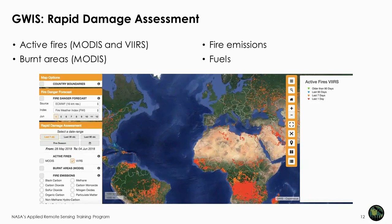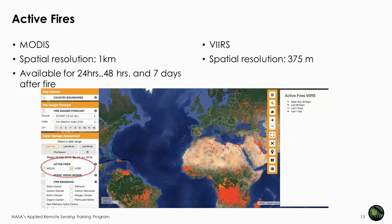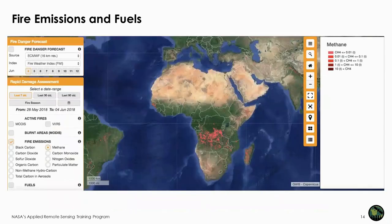The rapid damage assessment includes active fires from MODIS and VIIRS, burned areas from MODIS, fire emissions, and fuels. The active fire data are available from MODIS at 1 kilometer spatial resolution or VIIRS at 375 meters spatial resolution. They are available for 24 hours, 48 hours, and 7 days after the fire. The fire emissions data are provided by the Copernicus Atmosphere Monitoring Service. Fuels are provided by Lucretia Pettinari, who created a global fuel bed dataset in 2015.